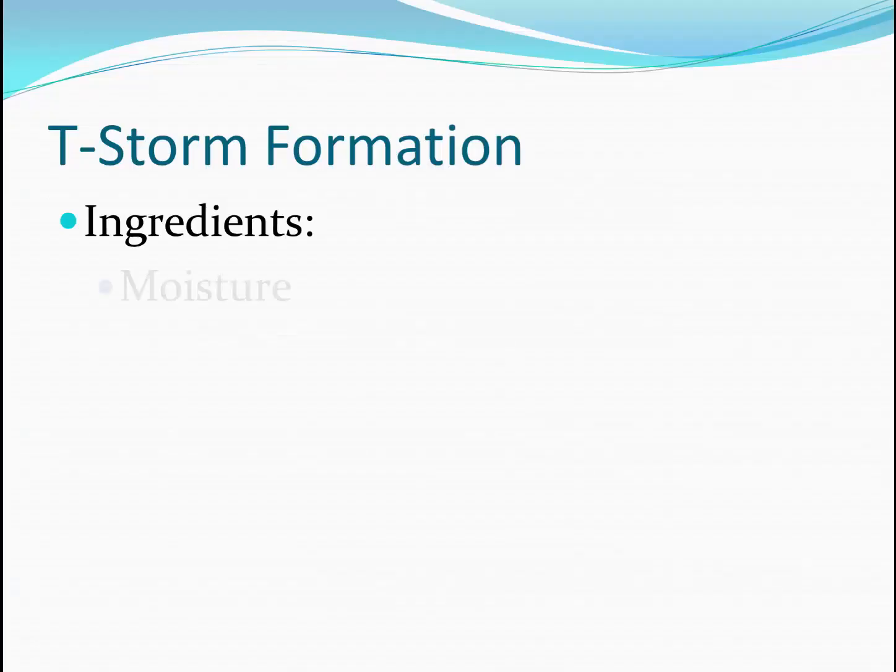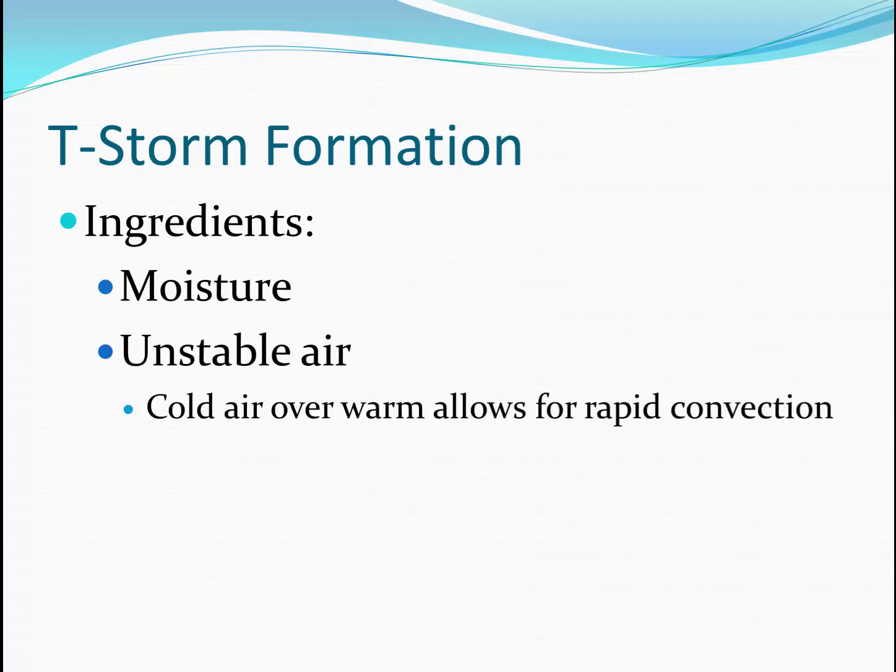There are two basic ingredients for thunderstorm formation. We need plentiful moisture and unstable air. Unstable air means that convection can very easily take place. In order to accelerate convection, we need very cold air aloft. That allows the warm surface air to rise quickly.